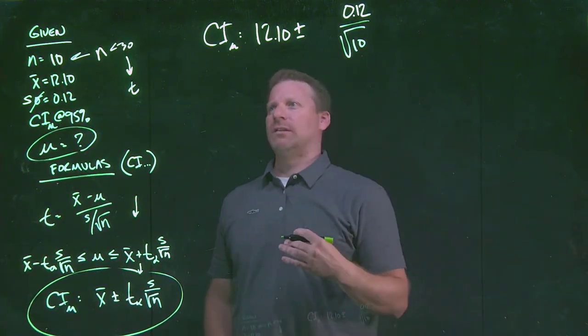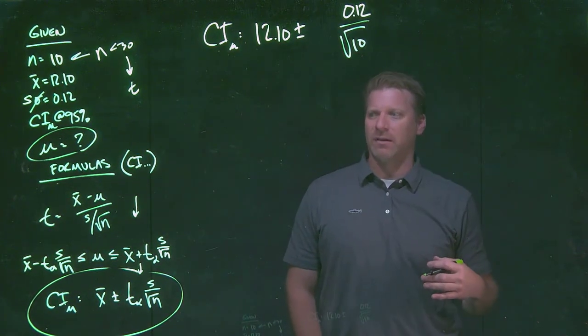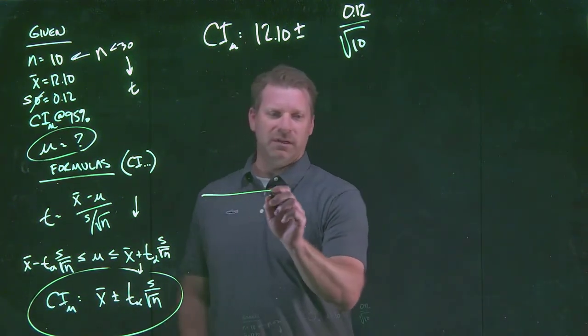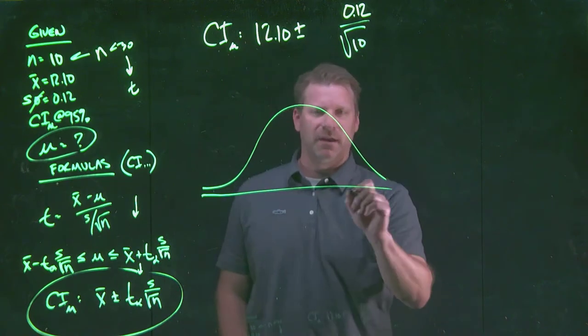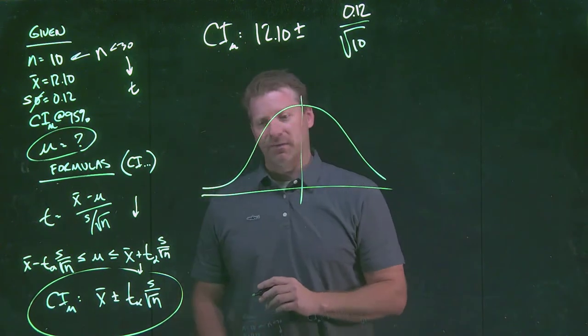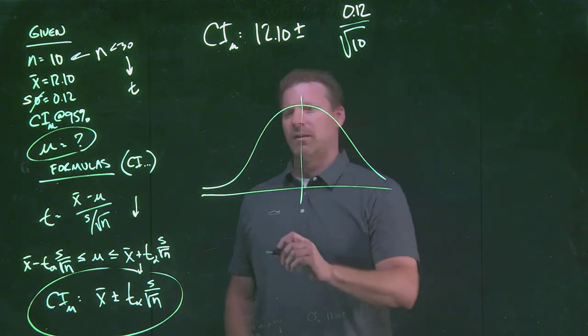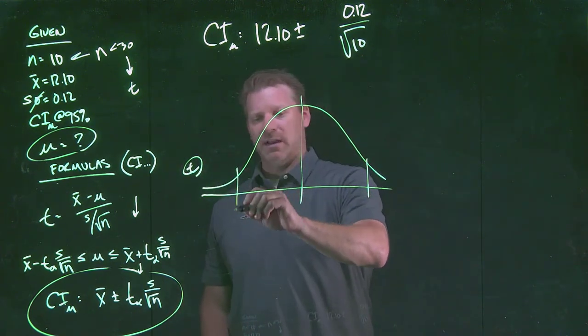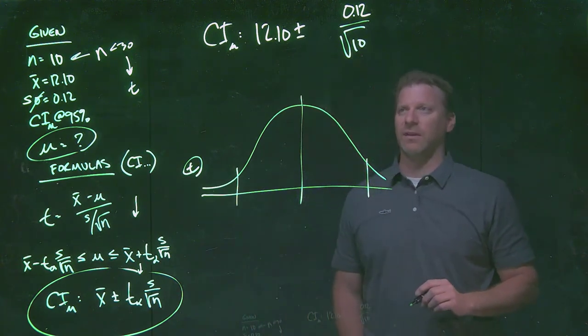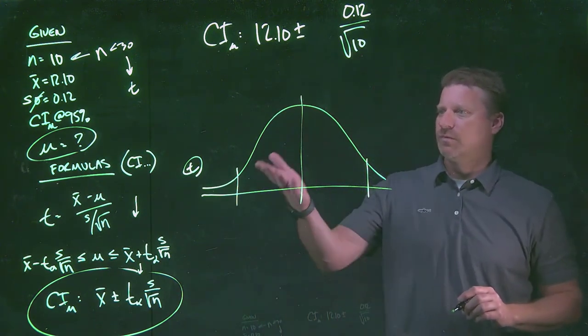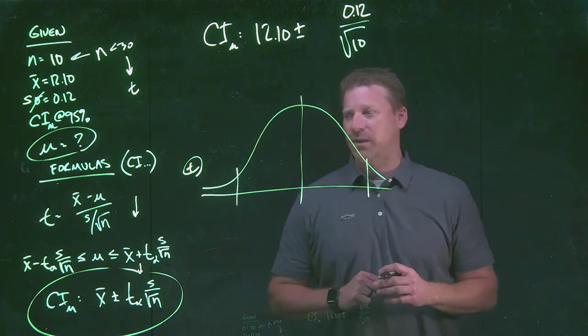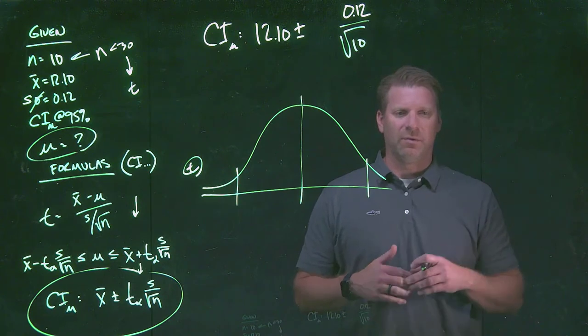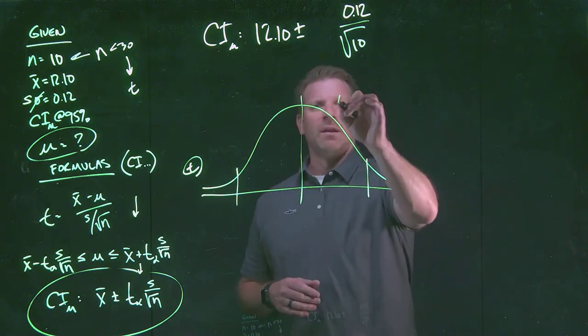Now, we introduced T distributions and we talked about that there's a lot of similarity with a Z distribution. We do need to use a different table. Obviously, we have a different type of distribution that we're dealing with. To understand the way that our tables work, we have to know two things about our specific T distribution. We have this whole family of different distributions that make up student Ts, with that limiting distribution being the Z distribution.